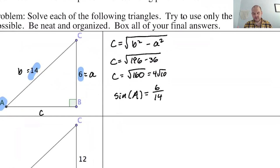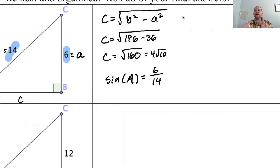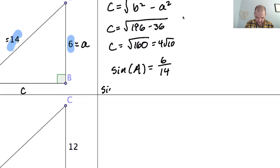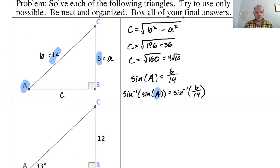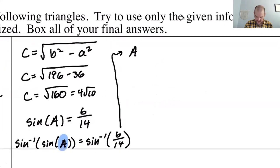The sine of A equals opposite over hypotenuse, so sine of A equals 6 over 14. To get A out of that, I take the inverse sine of both sides. The sine inverse of the sine of A collapses down to just A, giving us A equals the inverse sine of 6 over 14.